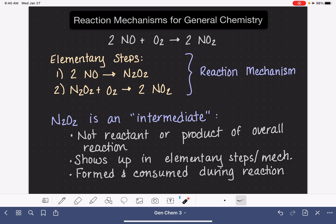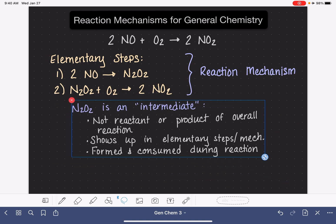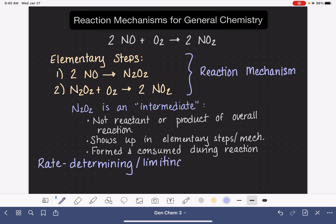For all mechanisms, one of the elementary steps is significantly slower than all of the others. And this elementary step that is slow is referred to as the rate determining or the rate limiting step. The terms are used interchangeably. The rate determining or rate limiting step is defined as the slowest elementary step. When I say slow, I'm talking about the rate of the reaction, the one that has the slowest rate.